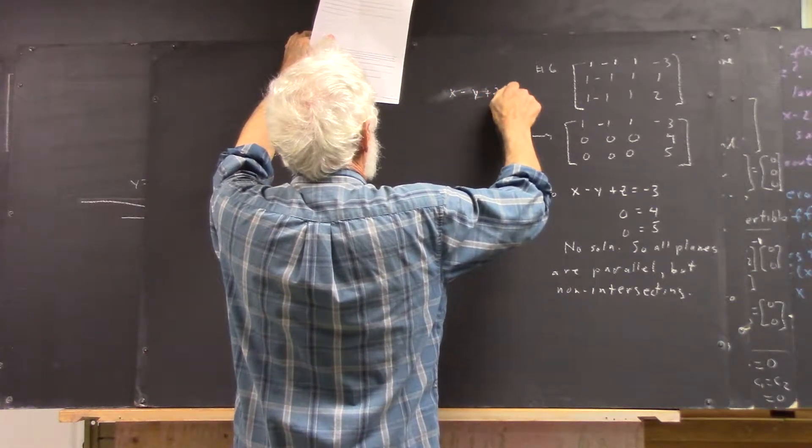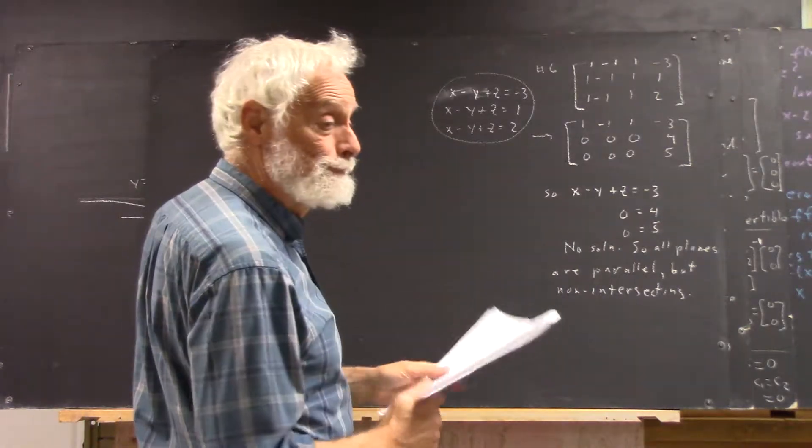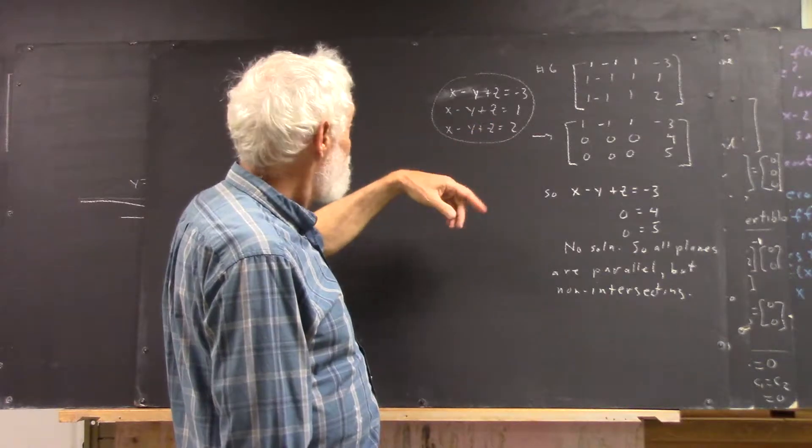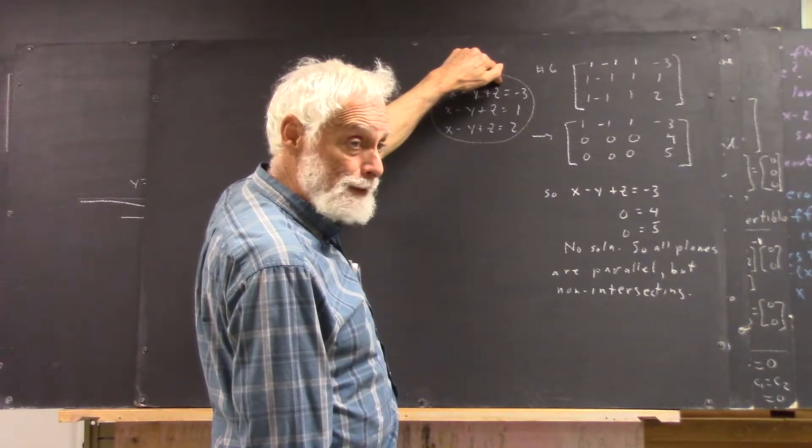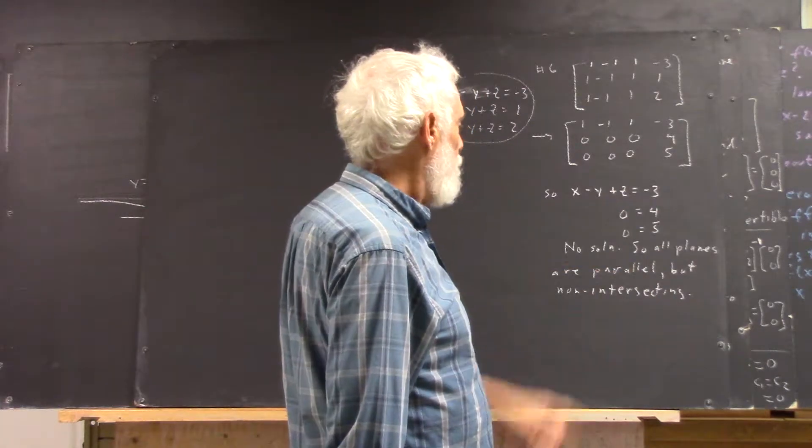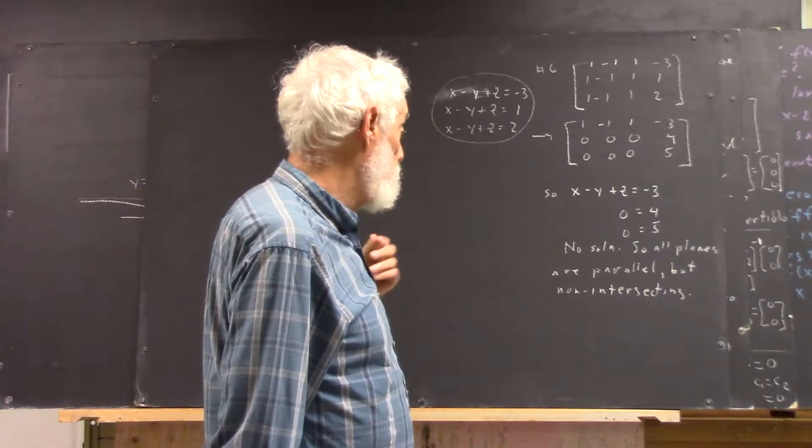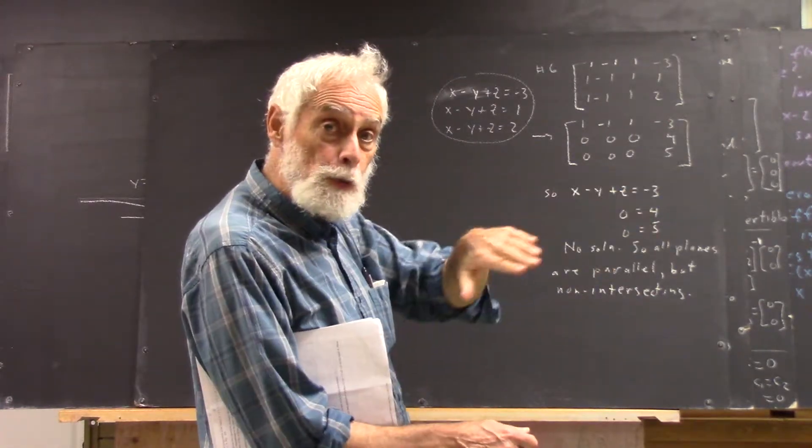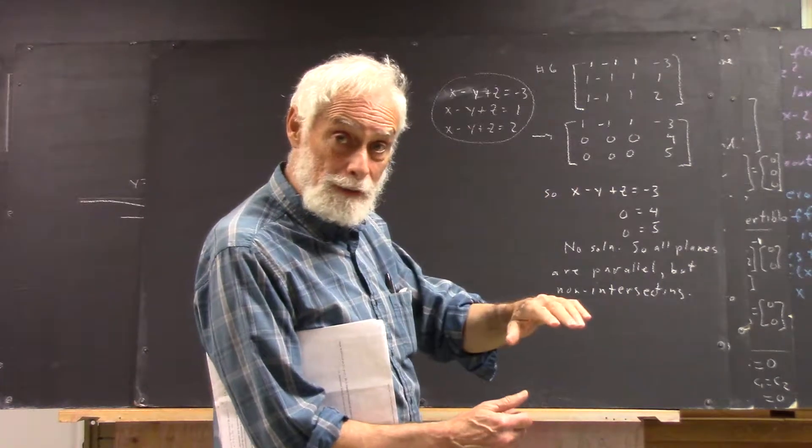Okay, number six on the first practice test gives you something like this. Actually it's x, y, and z. x minus y plus z equals negative three, x minus y plus z equals one, x minus y plus z equals two.